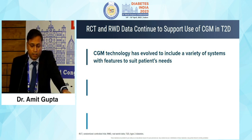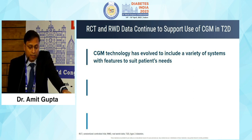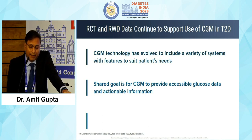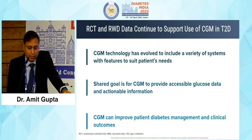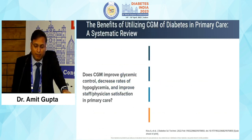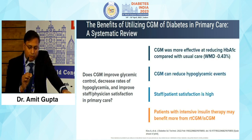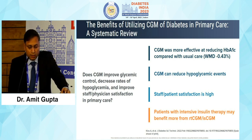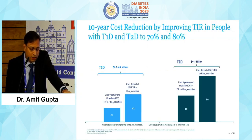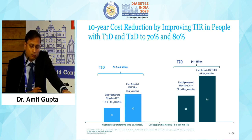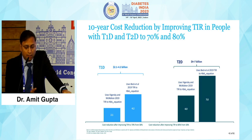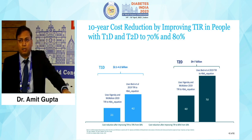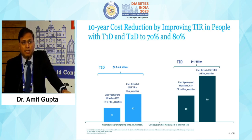CGM technology has evolved over time with a variety of systems to suit different patient needs. The shared goal is for CGM to provide accessible glucose data and actionable information, improving patient diabetes management and clinical outcomes. A systematic review on CGM in primary care showed CGM was more effective at reducing HbA1c compared with usual care and can reduce hypoglycemic events. The 10-year cost reduction by improving TIR in type 1 and type 2 diabetes is 70–80%, so in the long run CGM is not expensive — good glycemic control saves money by preventing complications.